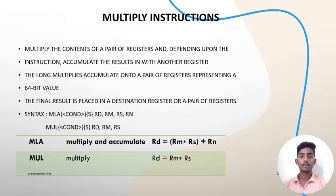Multiply instructions multiply the contents of a pair of registers and, depending upon the instruction, accumulate the result with another register. The long multiplies accumulate onto a pair of registers representing a 64-bit value. The final result is placed in a destination register or pair of registers. MLA refers to multiply and accumulate, MUL is multiply.